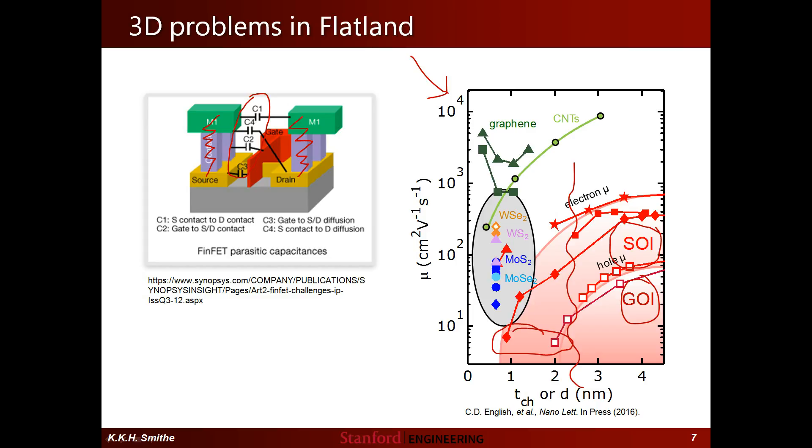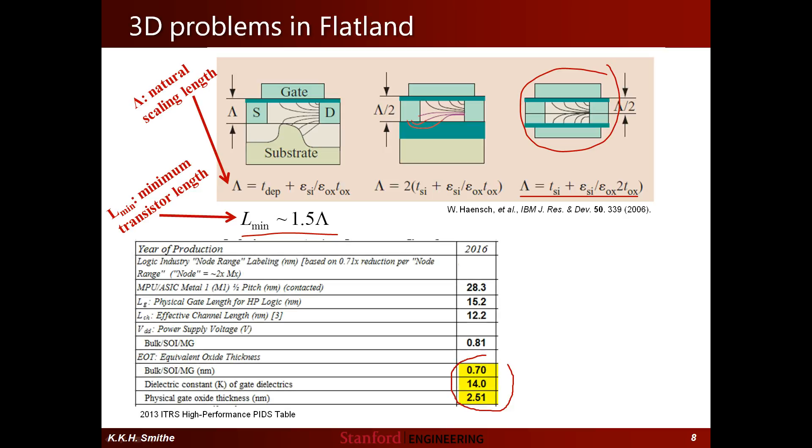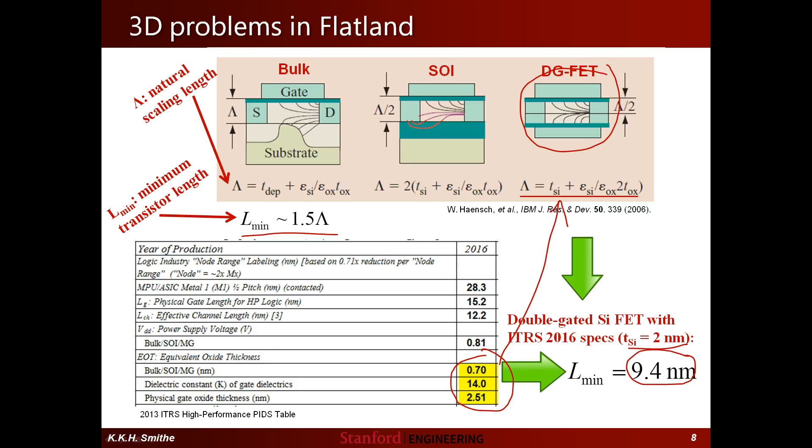This is illustrated in this figure over here for ultra-thin body semiconductor and insulator materials, specifically silicon and germanium, showing that below a thickness of 3 or 4 nanometers, the mobility of these materials tanks pretty hard. To add to this, in 2006 some guys at IBM did a pretty thorough review of scaling rules for various transistor architectures, and in that paper they show that the minimum gate length of a FinFET or similar double-gated device can have is given to first order by this expression right here.